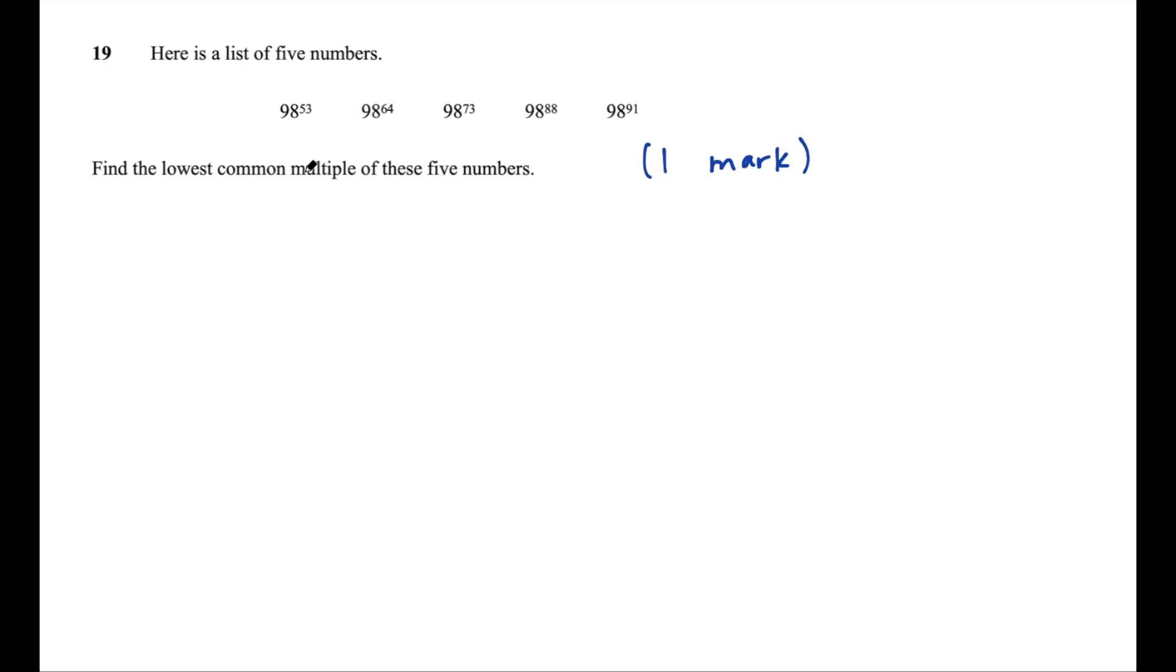Let's remind ourselves what a lowest common multiple is. So let's say we're looking for the lowest common multiple of 2 and 3. It's the lowest number that both of these numbers go into. In this case, it's 6. So 2 goes into 6, 3 goes into 6, and it's the lowest number that both of those numbers go into.